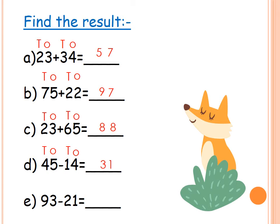The next one is 93 minus 21. Write who is tens and who is ones, then start with the ones. 3 minus 1 equals? After 1: 2, 3 — 2. Then, 9 minus 2 equals? After 2: 3, 4, 5, 6, 7, 8, 9. How many to reach 9? 7 fingers. Excellent, Primary 2.